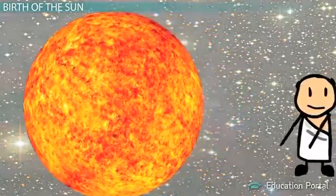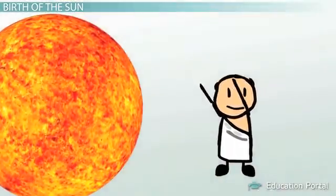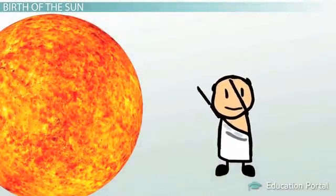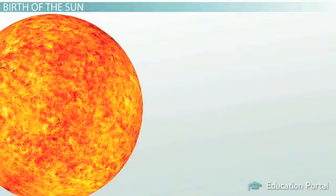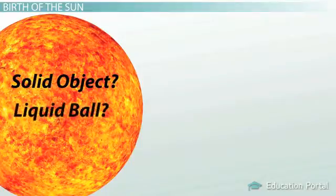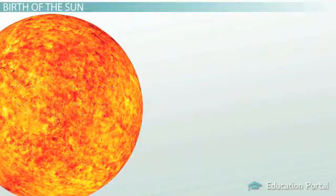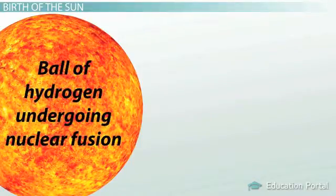The sun is so important to life on Earth that it has been worshipped and studied for centuries. In ancient times, people believed the sun was a burning ball of fire created by the gods. Later, people thought it was a solid object or a liquid ball. Now we believe it is a huge ball of hydrogen undergoing nuclear fusion.